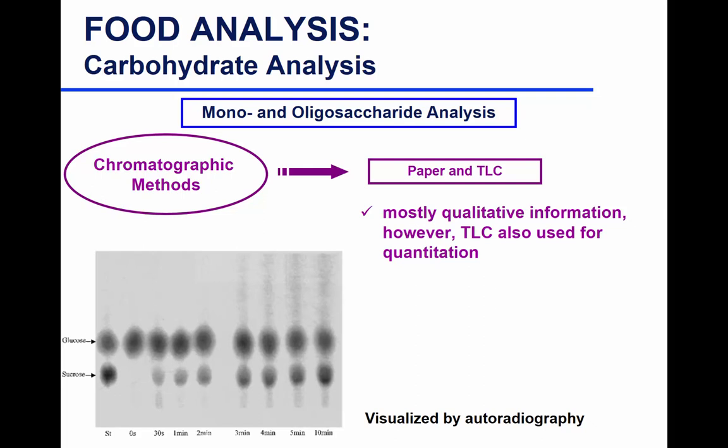Moving on to chromatography. We covered colorimetric and enzymatic assays. Chromatography is also a big tool for measuring mono-, di-, and oligosaccharides. Paper and thin-layer chromatography can be used mostly for screening — not necessarily quantitation, just identifying what types of mono- and oligosaccharides are present. With TLC you can get better resolution than paper, and if you run standards on the same plate you can get some quantification from spot intensity.